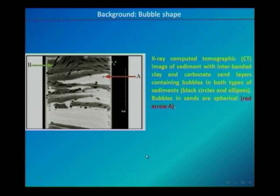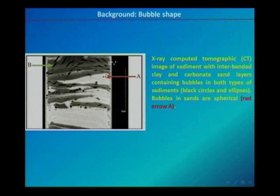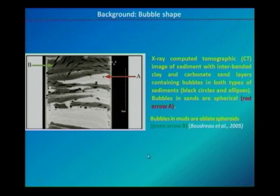In a core with intercalated layers of sand and mud — white sand and gray mud — two kinds of bubbles are visible: small spherical bubbles typical for coarse-grained sands, and much larger bubbles typical for mud. The larger bubbles are elliptical or disc-shaped, much taller and different in shape from the spherical bubbles of the sand.